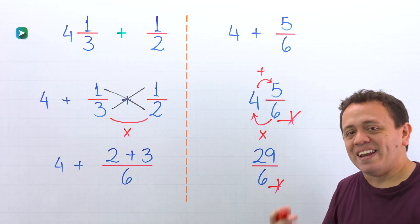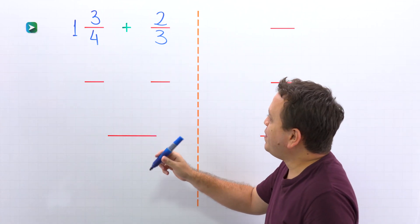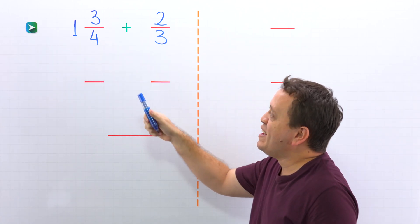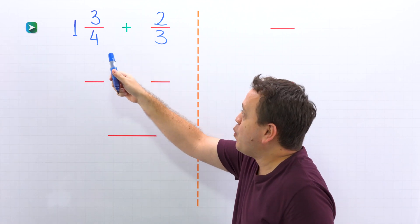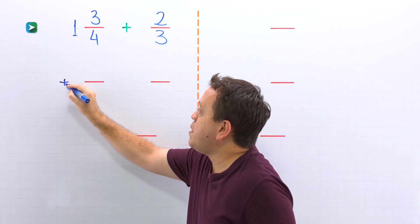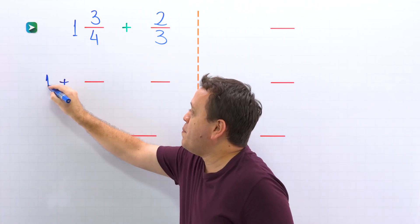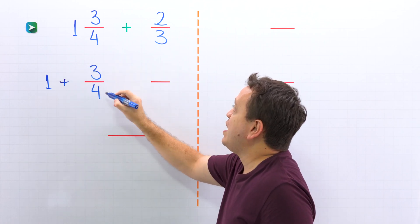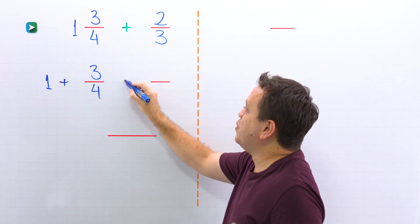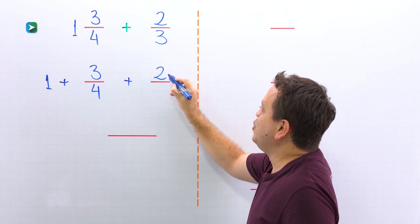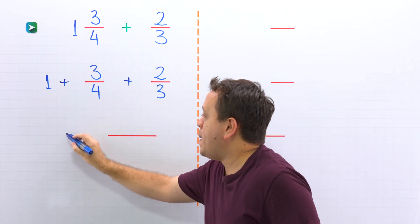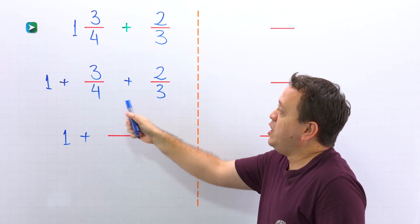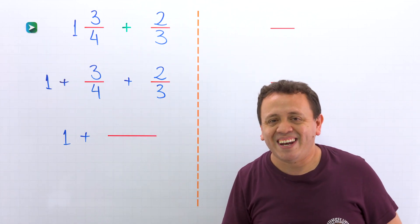Let's continue with another example. We need to find the sum of 1 and 3 fourths and 2 thirds. First, we will write the mixed number 1 and 3 fourths as the sum of the whole number 1 and the proper fraction 3 fourths. Now we put the plus sign and the fraction 2 thirds. So we have 1 plus 3 fourths, and next we need to add these two fractions with unlike denominators.